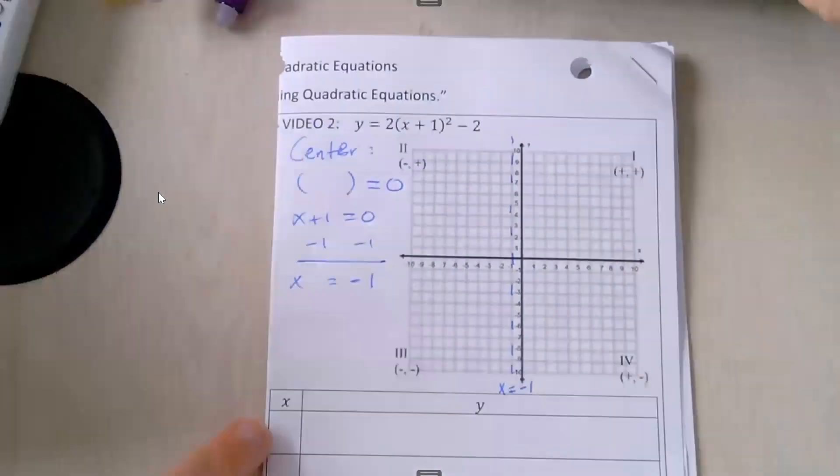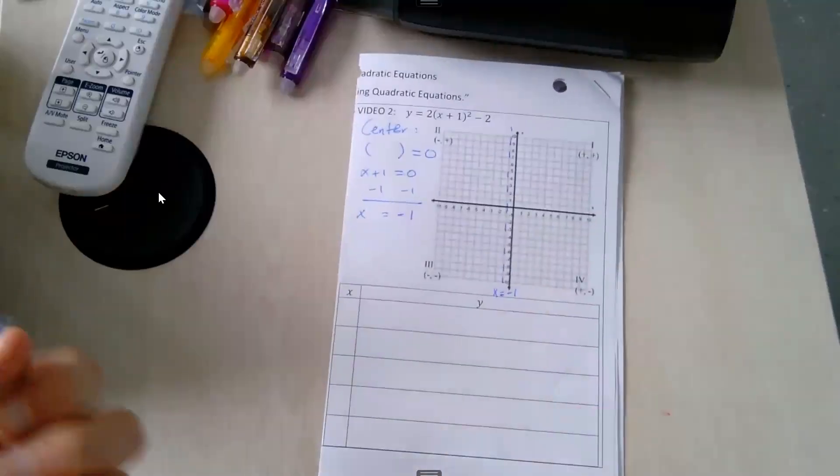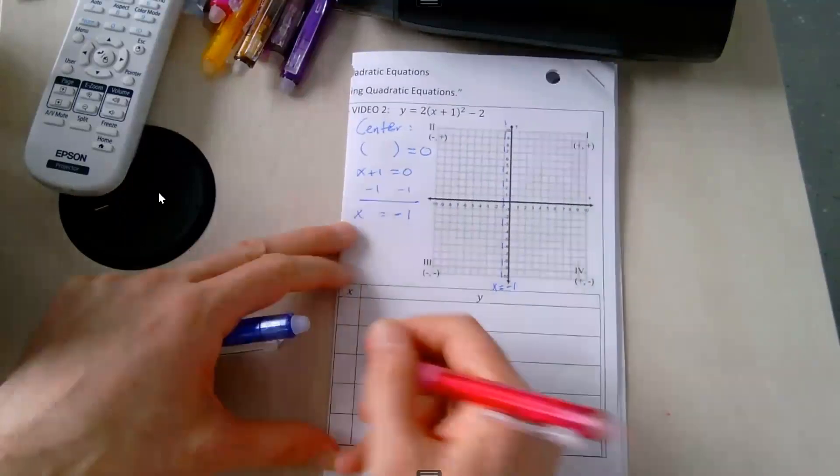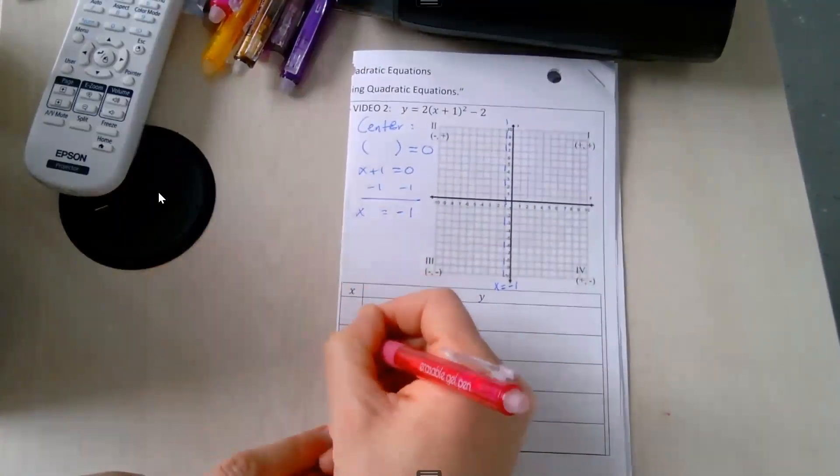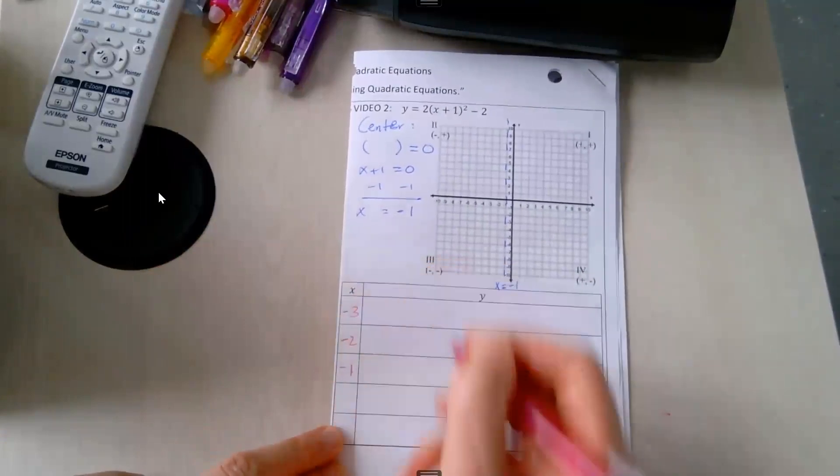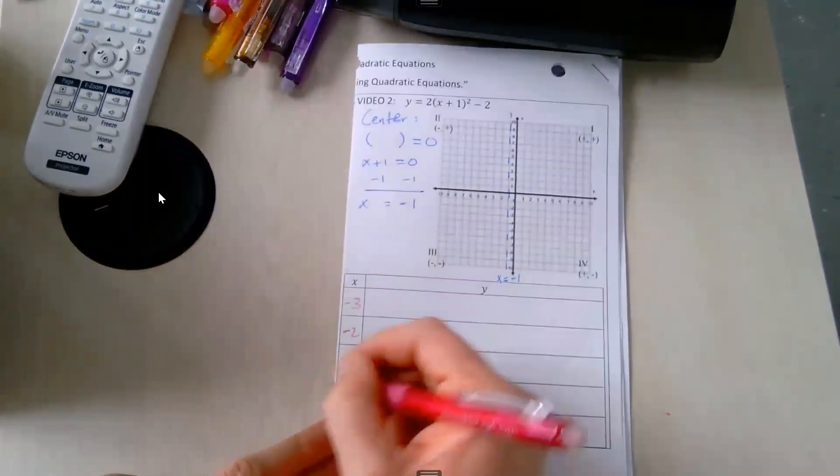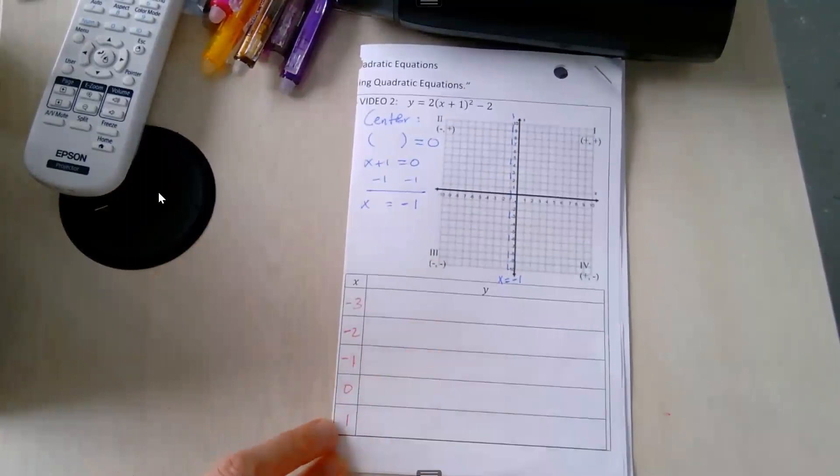Okay, so now let's think about the x values that we would like to use, because negative 1 is going to be in the middle. So we want to consider negative 2, negative 3. We also want to consider 0 and 1.